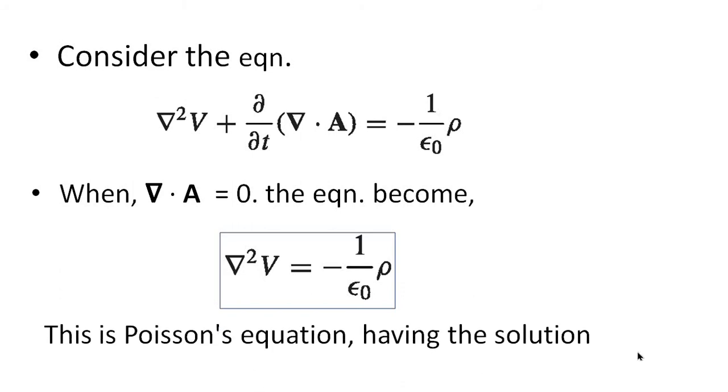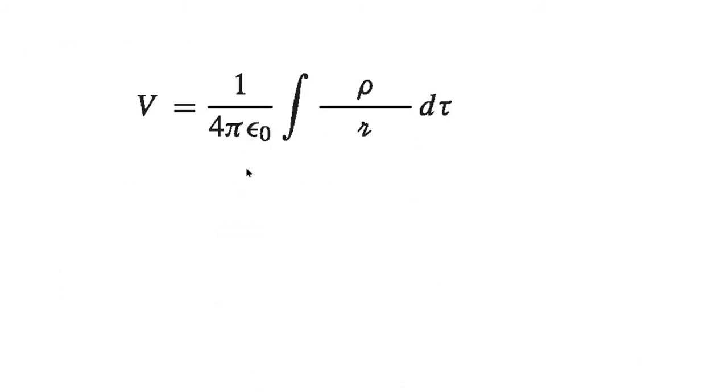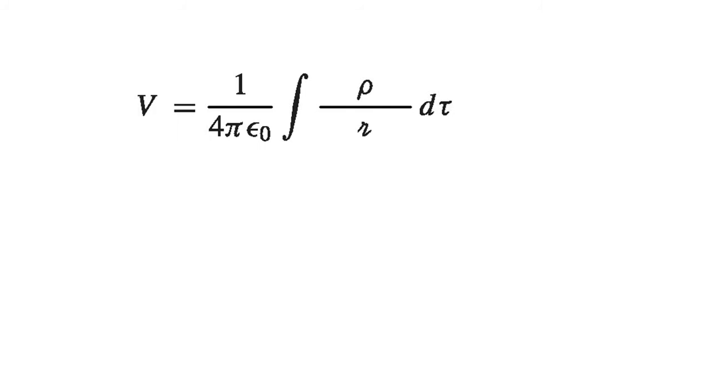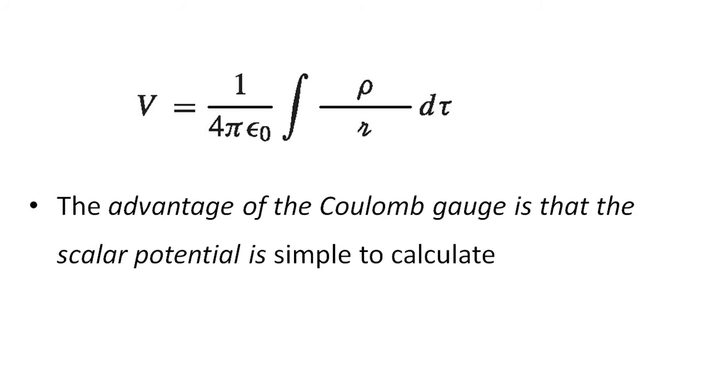This is the Poisson equation having the solution V equal to 1 by 4 pi epsilon 0 integral rho by r d tau. Now this is the scalar potential. We know that this scalar potential is simple to calculate. It is easy to calculate. So this is the advantage of Coulomb gauge.